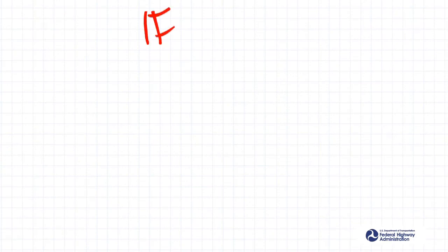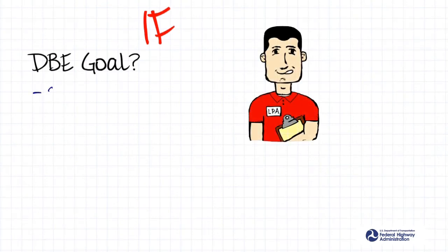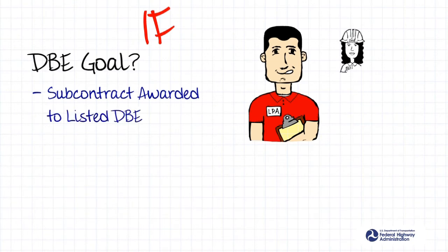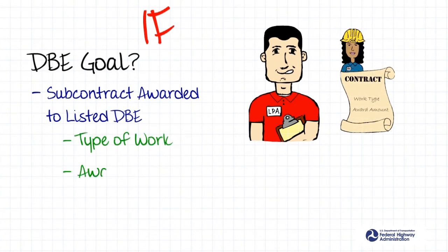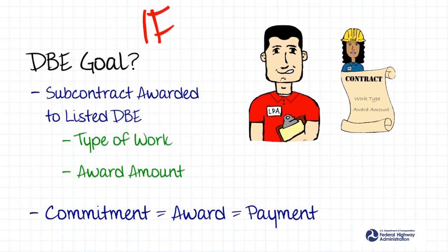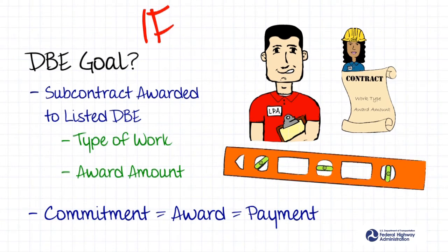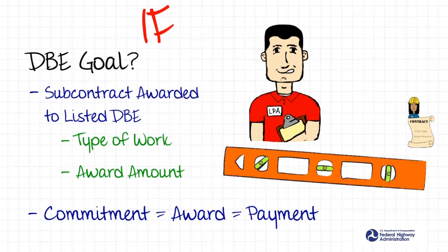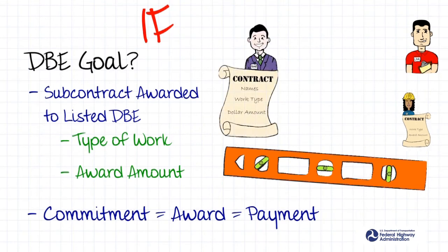If you answered yes to the DBE goal in the pre-award phase, you have another responsibility in the post-award phase. You must ensure that the DBEs listed by the prime contractor in the pre-award phase are actually awarded a subcontract for the type of work and dollar amount that was listed. The simplest way to sum up your responsibilities for a contract with DBE goals is to think of CAP. By carefully and effectively monitoring your projects, the project CAP will always be straight. It's the prime contractor's responsibility to notify you, the LPA, if the CAP is no longer equal and why, prior to any change. In other words, the DBE contract goal commitment made by the prime contractor in the pre-award phase should equal the actual award made to the DBE subcontractors.